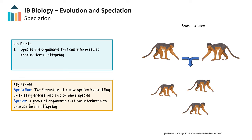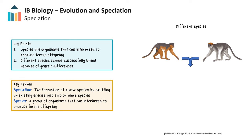In order for offspring to be fertile, the organisms must be very similar in their genetic makeup. Members of the same species have very similar features and morphologies with minor variations due to their genetic similarities. Different species cannot breed with each other because there is enough genetic difference that they cannot combine to produce viable offspring. If the species are close enough, they are sometimes able to produce offspring, but they will be infertile — like the liger, a cross between a tiger and a lion.